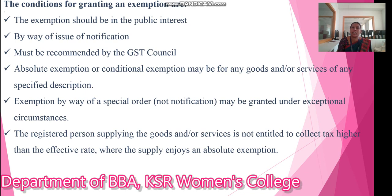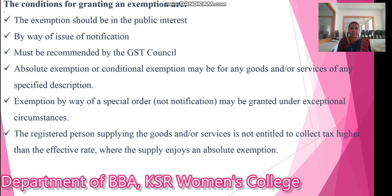Next are the conditions for granting an exemption. The first condition is that the exemption should be in the public interest. By way of issuing notifications, it must be recommended by the GST Council. Absolute or conditional exemptions may be granted for any goods and services or any specific description. Exemption by way of special order may be granted under exceptional circumstances. The registered person supplying goods and services is not entitled to collect tax higher than the effective rate where the supply enjoys absolute exemption.